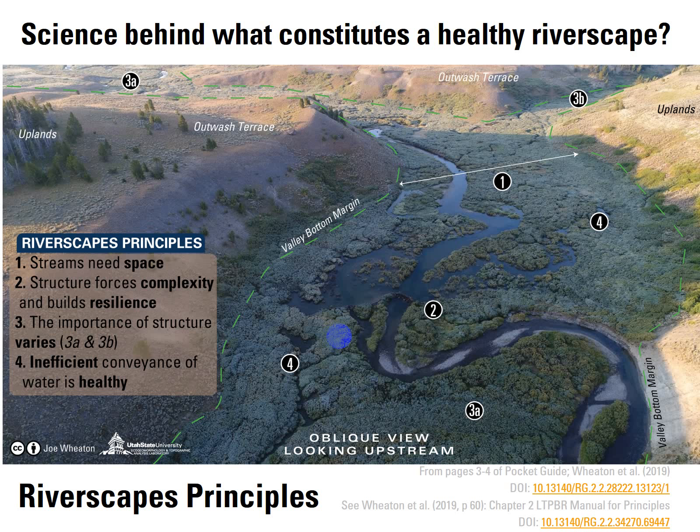The science behind what constitutes a healthy riverscape we heard a lot about in module one. Colin laid out a nice foundation for some of the stage zero and anastomosing, which Mark built upon. Even though Ben Goldfarb claimed to just be sharing more of a humanities perspective, the book Eager is really well researched and actually a great source for getting a handle on some of the science surrounding beaver. There's a ton in the notes to that book.